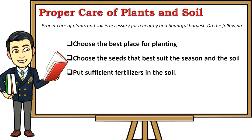Third, put sufficient fertilizers in the soil. It is advisable to prepare the soil before planting — this means cleaning the soil and its surrounding area and mixing the soil with organic fertilizers. Organic fertilizers are safe and economical to use, while inorganic or commercial fertilizers have to be regulated because overuse can poison the soil.